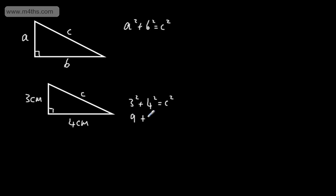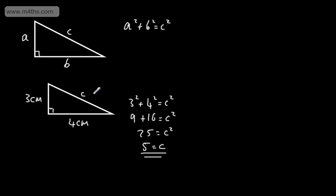3 squared is 9, 4 squared is 16, and that's equal to C squared. Adding the two, 25 is equal to C squared. We now need to take the square root. The square root of 25 is plus or minus 5. As this is a length, we take the positive value, so C is 5. The length of C is 5 centimetres — we've found the missing length. It doesn't matter if you call this one B and this one A; we simply have the sum of the squares of the two shorter sides equal to the square of the longer side.